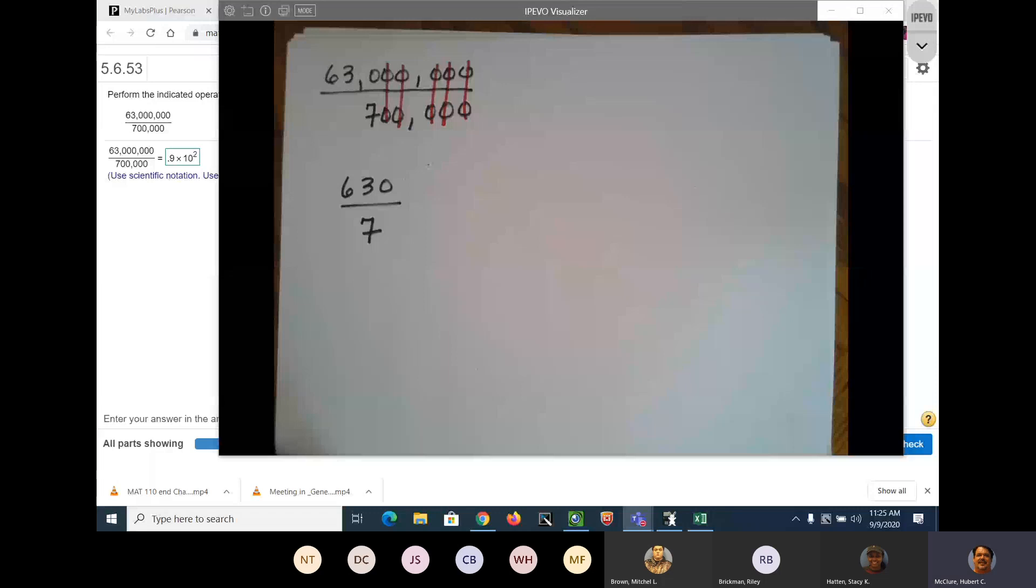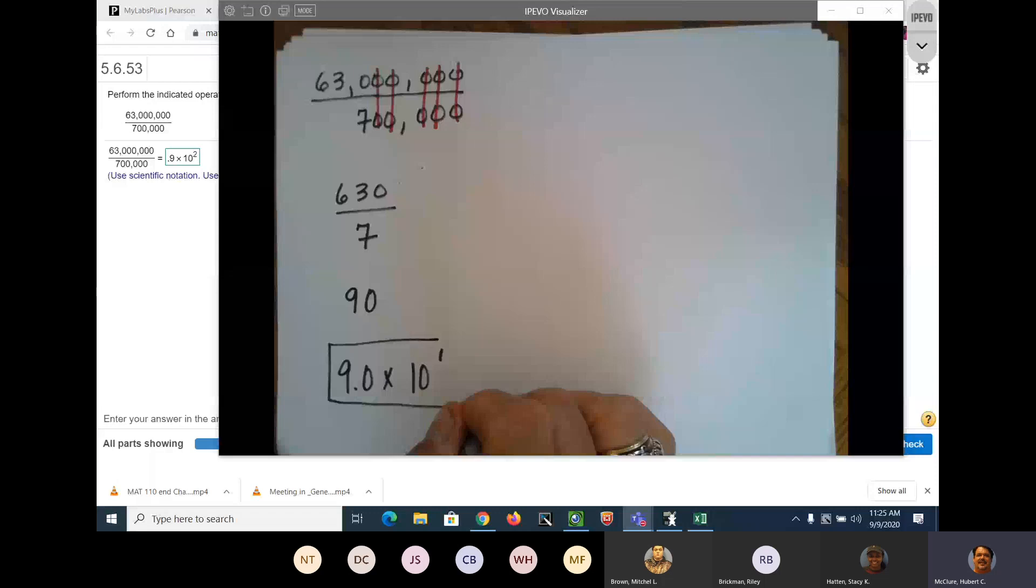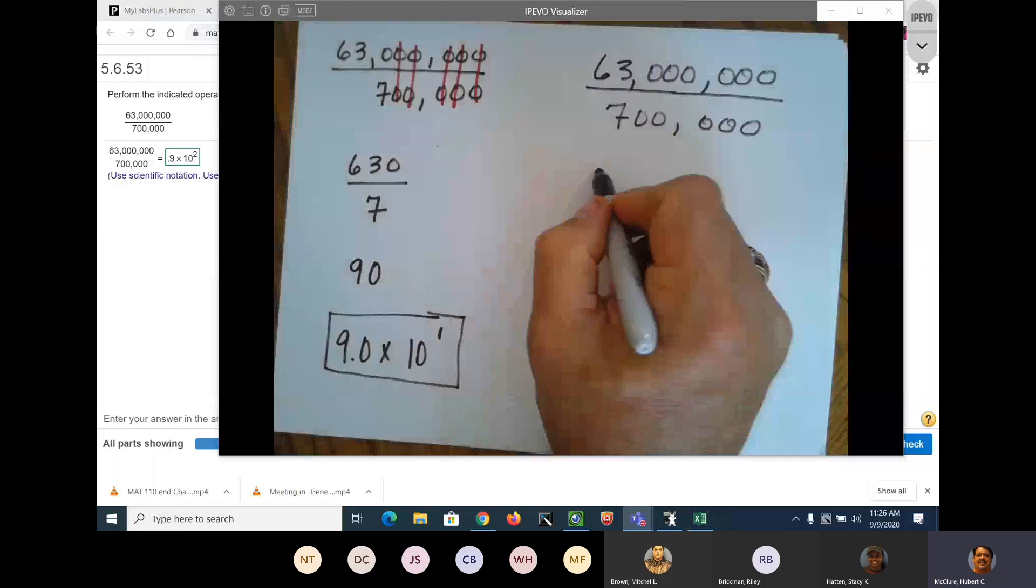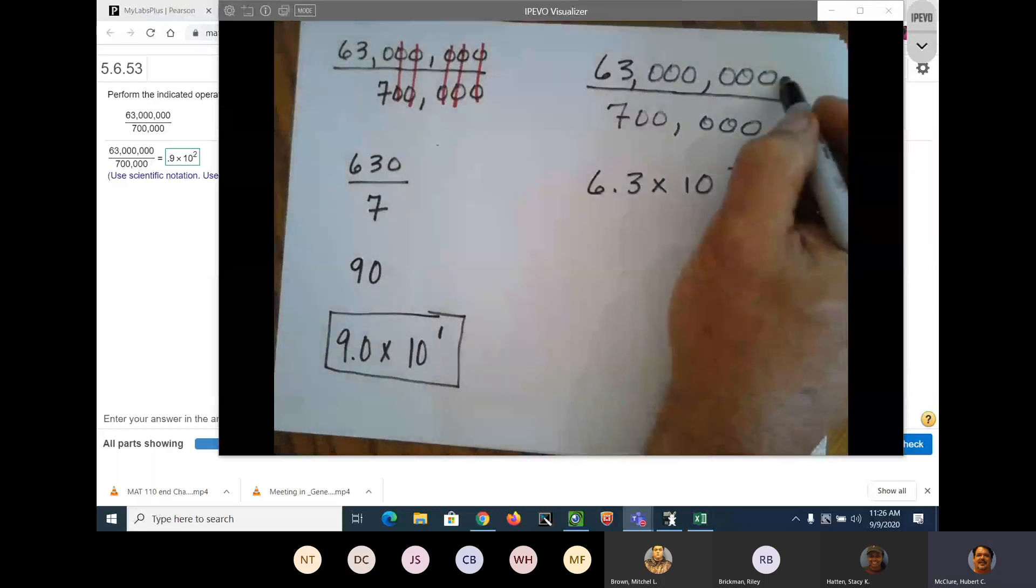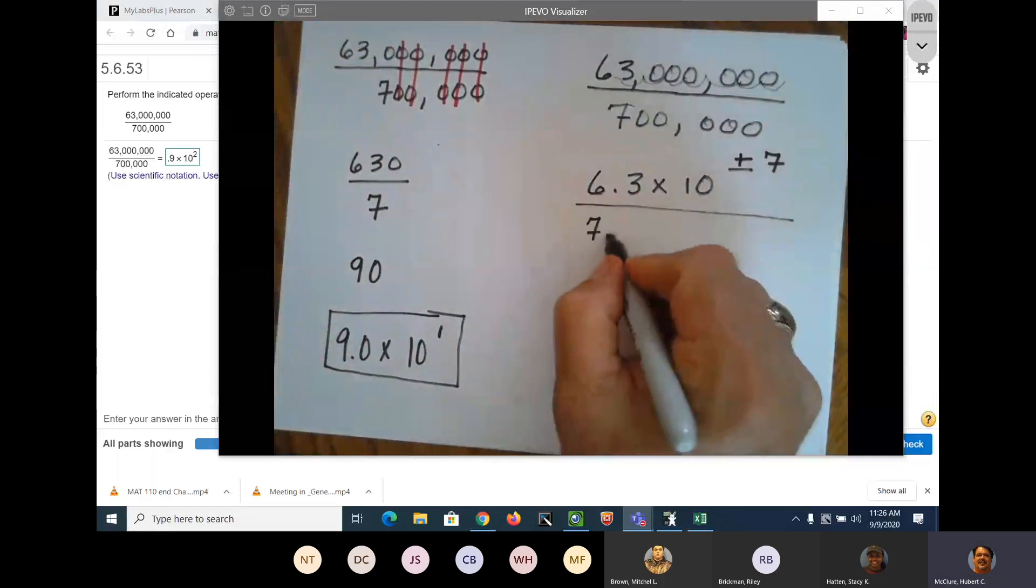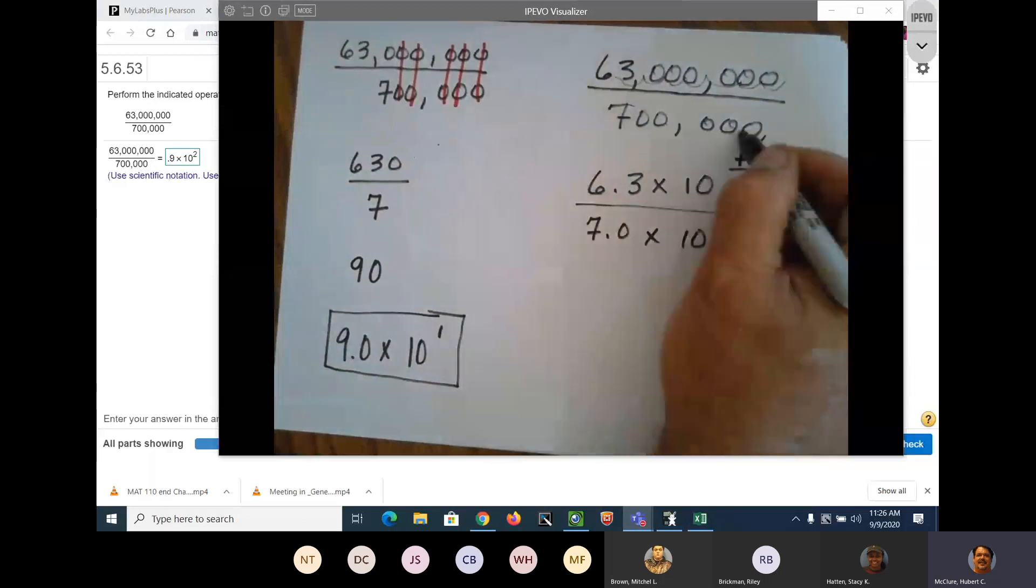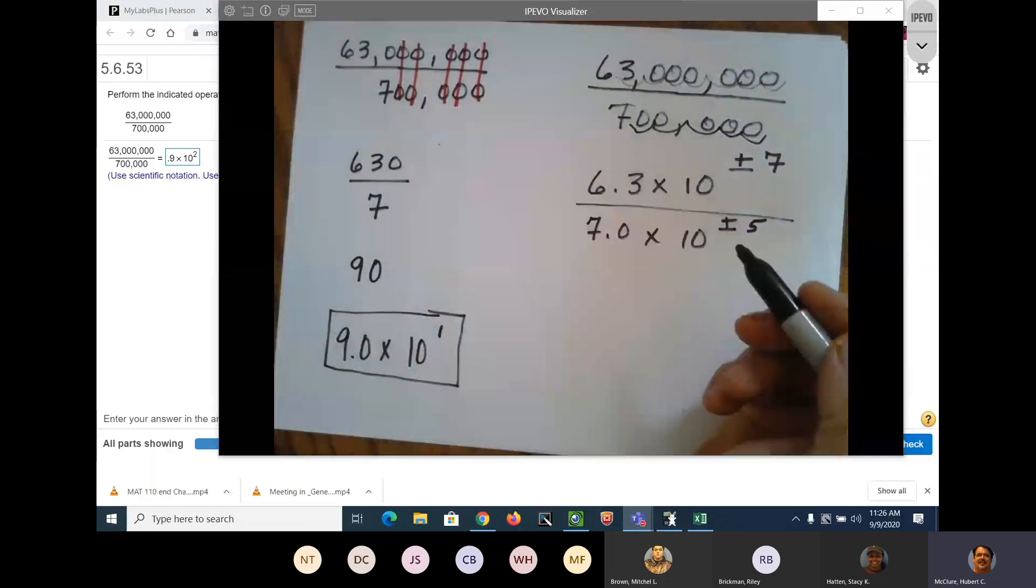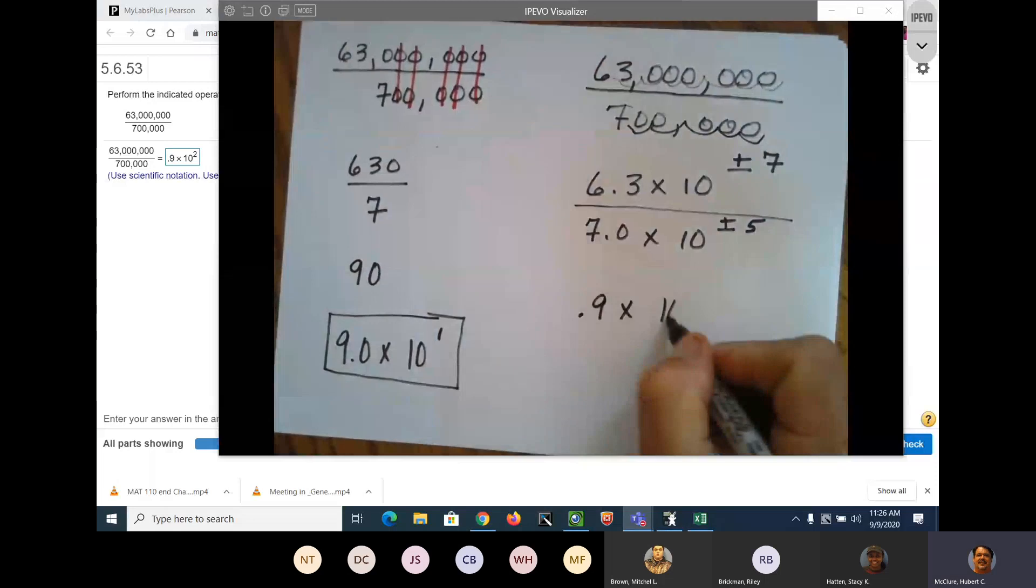Now let's see what we get if we do it by scientific notation. The top is going to be 6.3 times 10 to the... let's see, one, two, three, four, five, six, seven. And you need to move this to the right to get it back the way it was, divided by 7.0 times 10 to the fifth: one, two, three, four, five. And 7 will go into 63 nine times, and 7 minus 5 is 2.